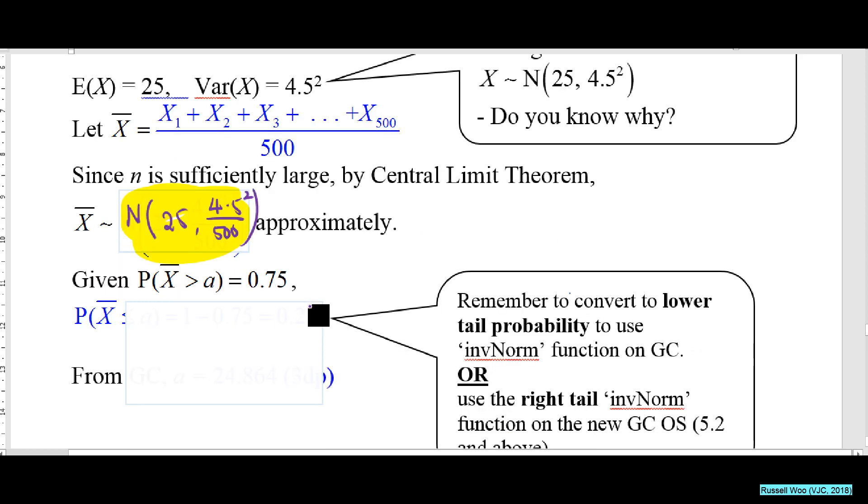Now you want to solve this. Remember to convert to lower tail, because the danger for all of us, the common mistake is that you'll inverse 0.75. The GC will only tell you the value if you give it a left-bound area. Maybe I'll draw the bell curve just to recap.